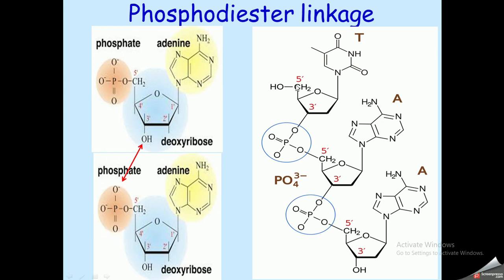In a nucleotide chain, the first nucleotide has a free five-prime end, and the last nucleotide has a free three-prime end. DNA is usually written from five-prime to three-prime.